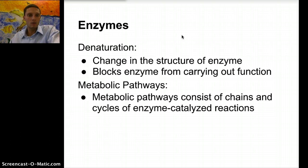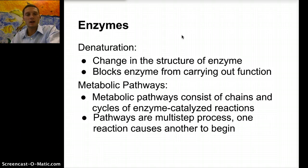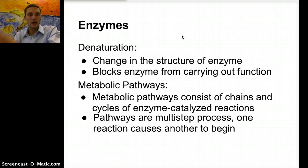Multiple reactions in a row are all necessary to produce some final product. A good example would be the Calvin cycle or the Krebs cycle, which we'll talk about during photosynthesis and respiration. Those pathways are a multi-step process — one reaction causes another to begin. The products of one reaction are going to cause the next reaction to begin. This metabolic pathway is basically a series of steps or a chain of different enzymes and reactions occurring in a stepwise fashion.